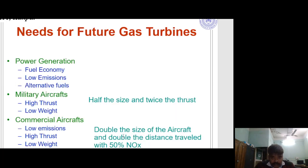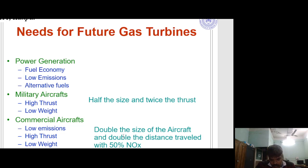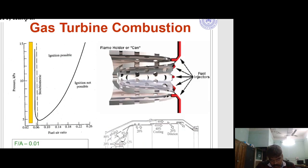Future requirements for gas turbines: For power generation — fuel economy, low emission, and alternative fuels. For military aircraft — high thrust, low weight, half the size and twice the thrust. For commercial aircraft — low emission, high thrust, low weight, fuel economy, with a goal to double the aircraft size and travel distance while achieving 50% reduction in NOx.